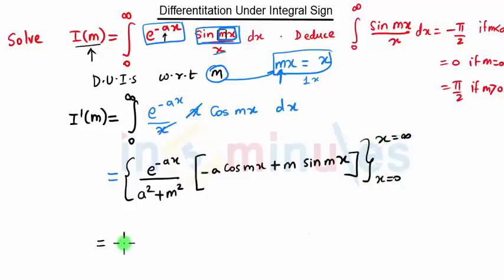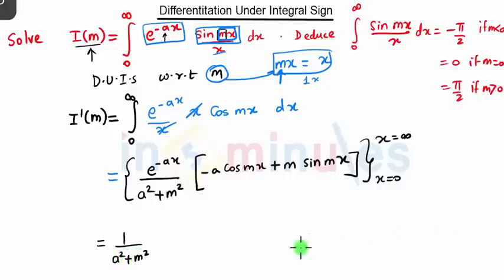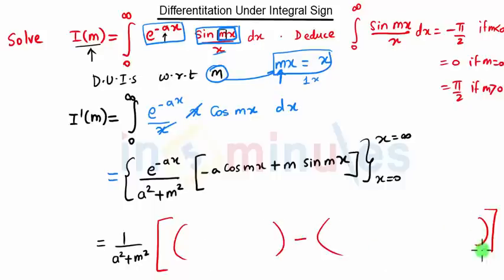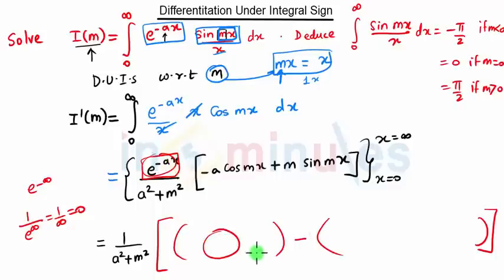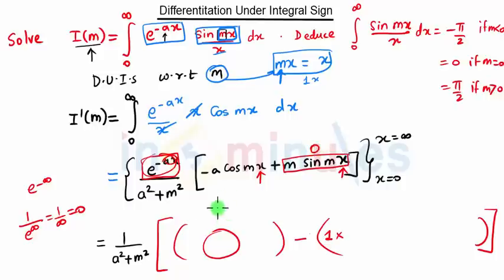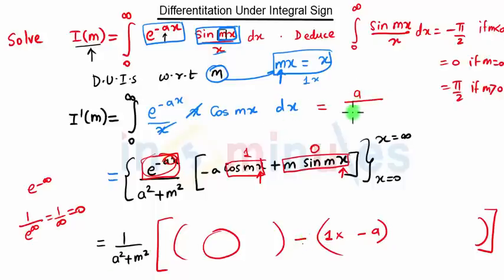We get 1/(a² + m²), then apply upper limit minus lower limit. When we put x equal to infinity, e^(-ax) becomes e^(-∞) = 0, so that entire term becomes 0. When we put x equal to 0, e^0 = 1; sin(0) = 0 so the m·sin(mx) term vanishes; cos(0) = 1 so the term gives -a. Thus minus a times minus gives plus, and I'(m) = a/(a² + m²).